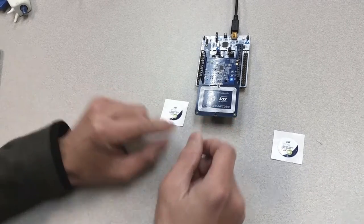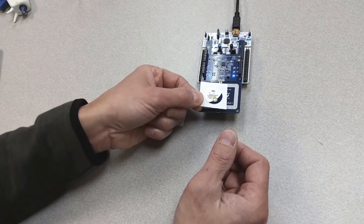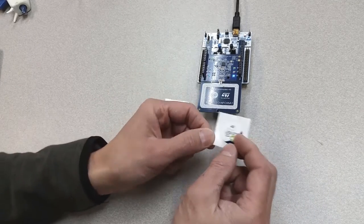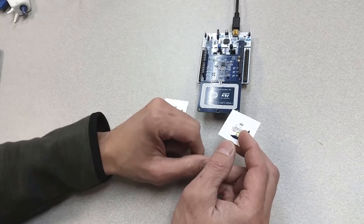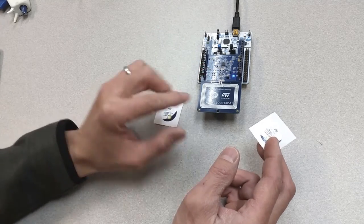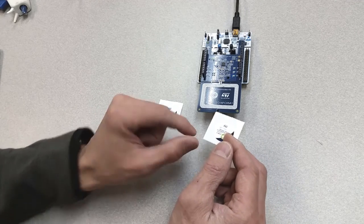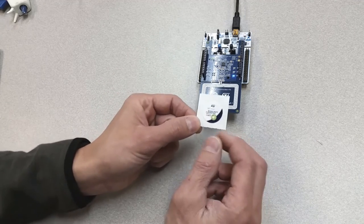If I tap this tag, notice the different light patterns. It means that this reader has a certain kind of firmware that basically identifies and authenticates the signature stored on this tag.